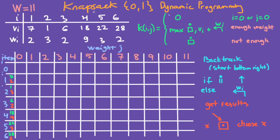In this video I'm going to show you how to do the knapsack dynamic programming problem. Here is our table. W, the total weight, is 11, so the columns go from 0 to 11. The items are from 1 to 6, and we add in another row — row 0. The rule says: if i (the row number) equals 0, or j (the column number) equals 0, then just fill in 0.